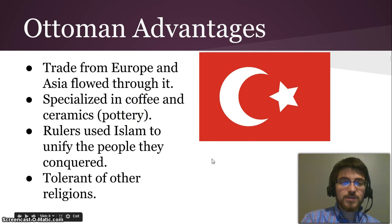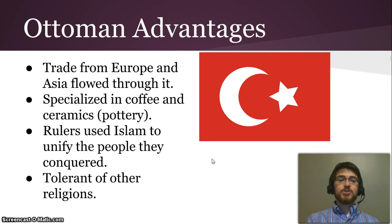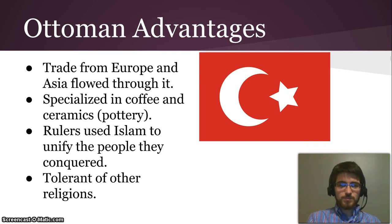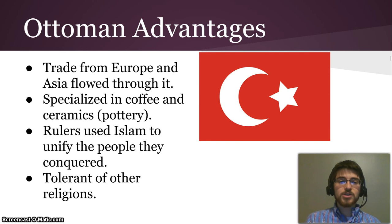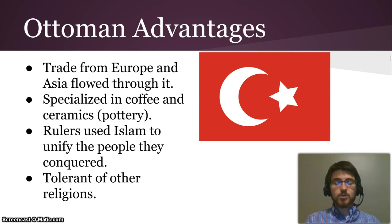Here are the advantages that the Ottomans had — the reasons they were able to take all that territory. Trade from Europe and Asia flowed through it, and they had specialized in coffee and ceramics, which is pottery. That meant they were able to trade these goods along these routes in particular. The rulers of the Ottoman Empire used Islam to unify the people that they conquered and bring them into the empire, often in more peaceful ways. And they were very tolerant of other religions, which allowed them to bring in the many different versions of Islam and also the Christians and Jews and other religions that were living in the area.